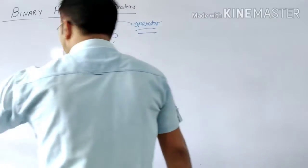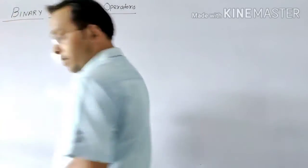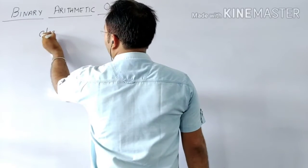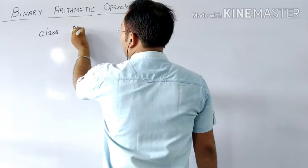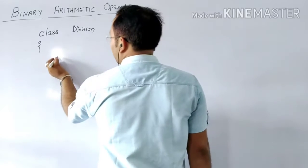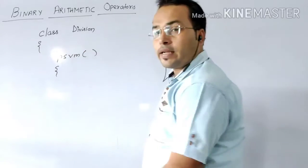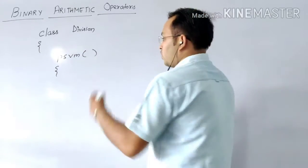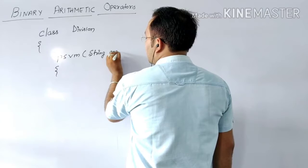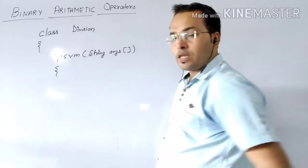Suppose we have to make one simple program for that. Simply, you just make a class, division, then in that one, we have to use PSVM, the short form of public static void main. You can use here string ARGS, because you are taught this thing in class A, so you can use this thing also.